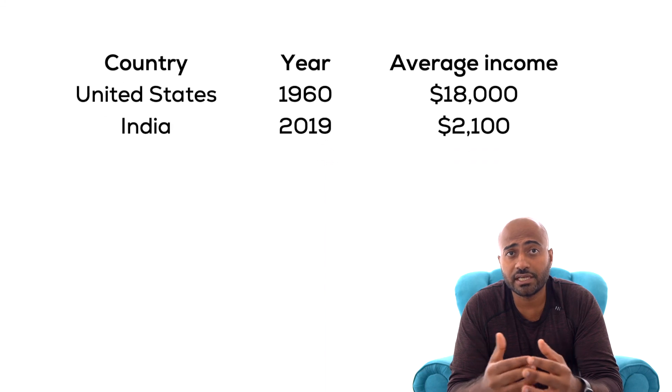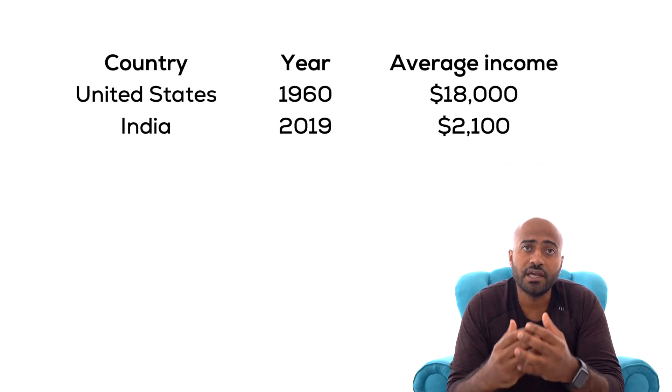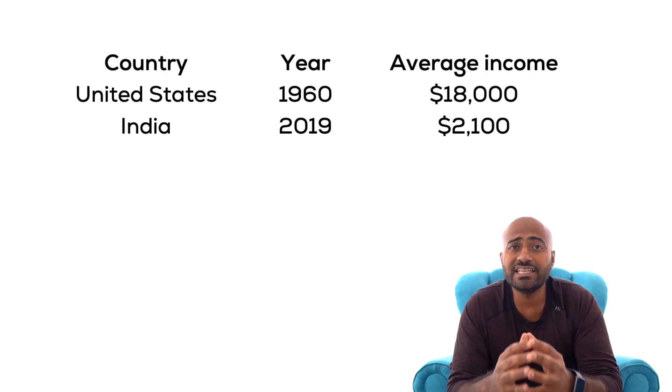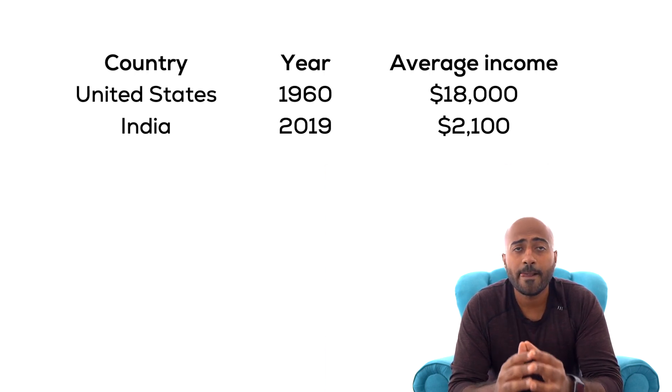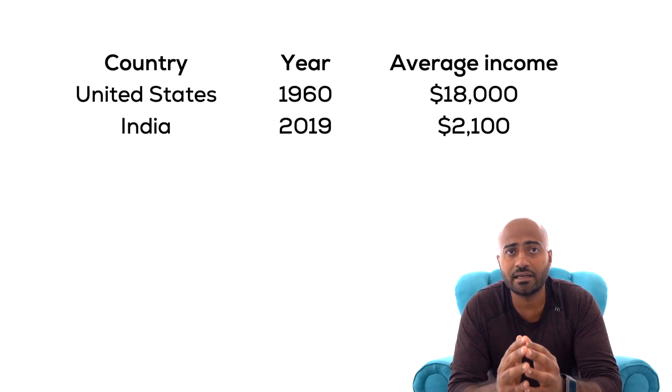Some countries are getting richer quicker. The per capita GDP in 1960 in the U.S. was $18,000 in real terms. In 2019, India's real per capita GDP was $2,100. The living standard in the U.S. in 1960 is roughly nine times that of India today. Our goal in the next series of videos is to discuss economic growth. There are many reasons why different countries grow at different rates. This area of economics falls under development economics, and it is an important field of research.